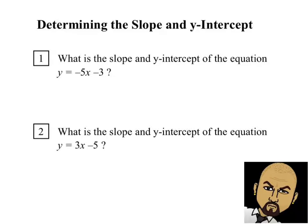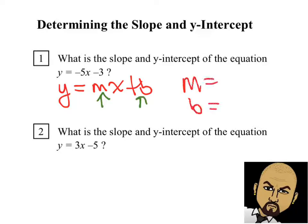Here we have y equals negative 5x minus 3. Remember that the generic form of the equation is y equals mx plus b. m is your slope and b is your y-intercept, so all you do is look at the equation. The slope is going to be the coefficient of your x variable, which is negative 5 here, and the y-intercept is the constant, which is negative 3.